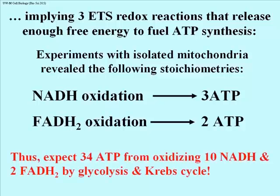Based on the amount of these electron carriers produced in the electron transport system, one could predict that the free energy from glycolysis and the Krebs cycle could fuel the synthesis of 34 ATPs. So now the question is, how is the exergonic electron transport system pathway actually linked to ATP synthesis, to oxidative phosphorylation?